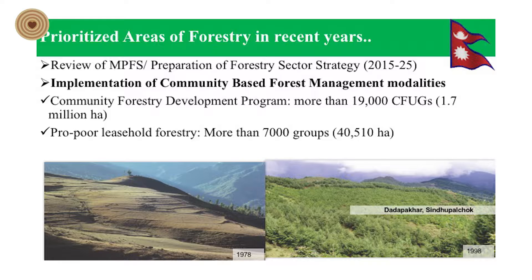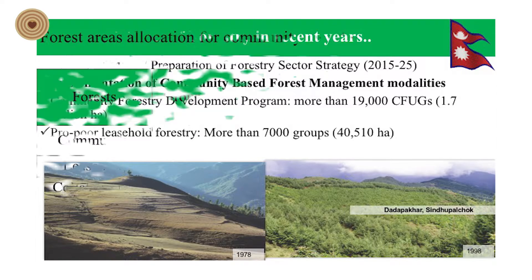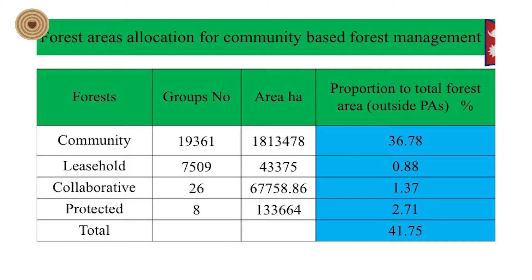Leasehold forest covers more than 7,000 groups, covering 40,510 hectares. This represents the scenario of community, leasehold, collaborative, and protected forest areas. The proportion of total forest area outside parks and protected areas shows that 36.78% of the forest is managed and handed over to the community level.